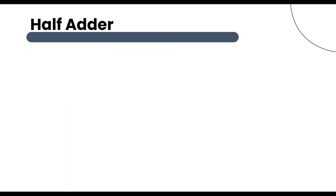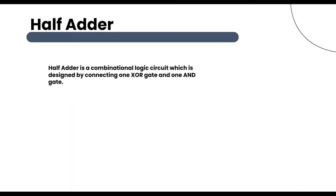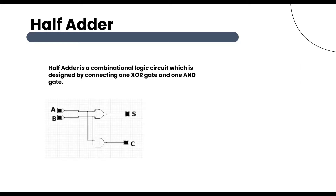Now let's discuss the half adder. A half adder is a combinational logic circuit which is designed by connecting one XOR gate and one AND gate. The half adder circuit has two inputs, A and B, which add two input digits and generates a carry and a sum.